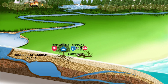Much of the remaining carbon gets released when organic matter decays. This process of decomposition occurs relatively quickly with animals, while it can take decades with plants. Burning also releases the carbon stored by trees back into the atmosphere.